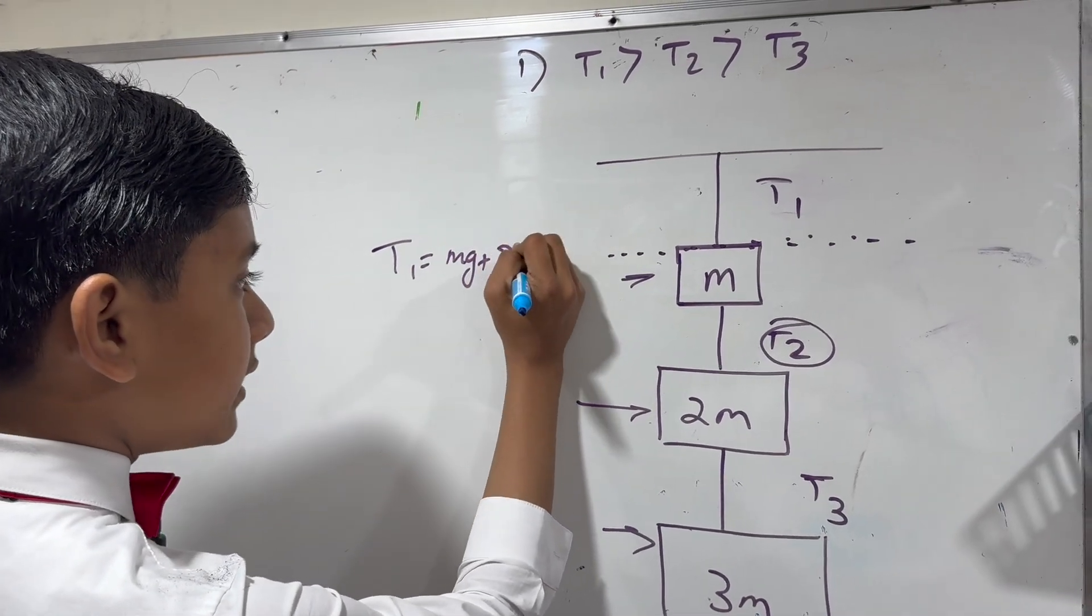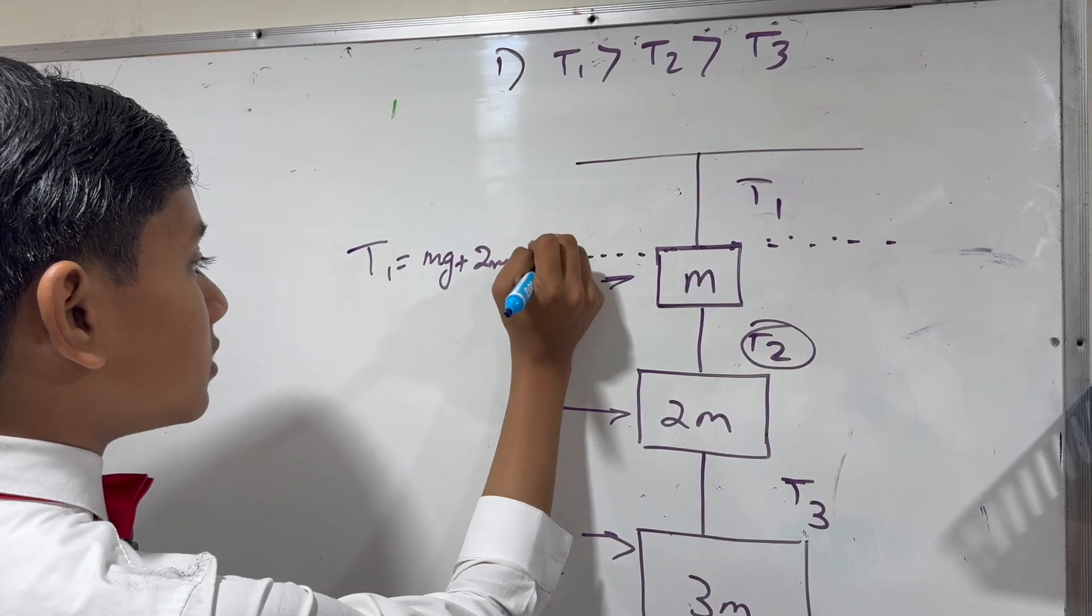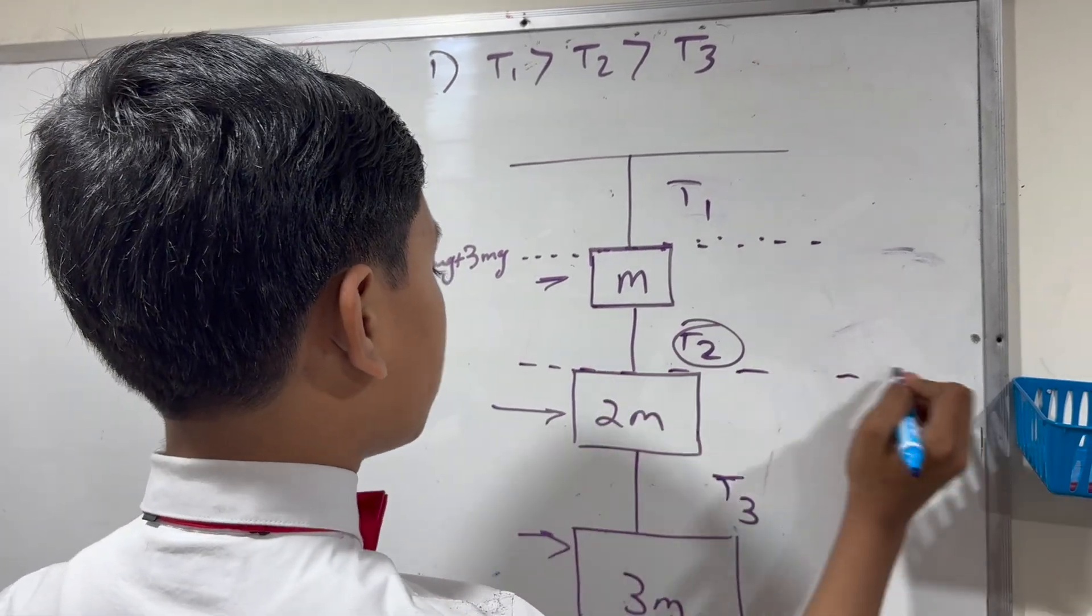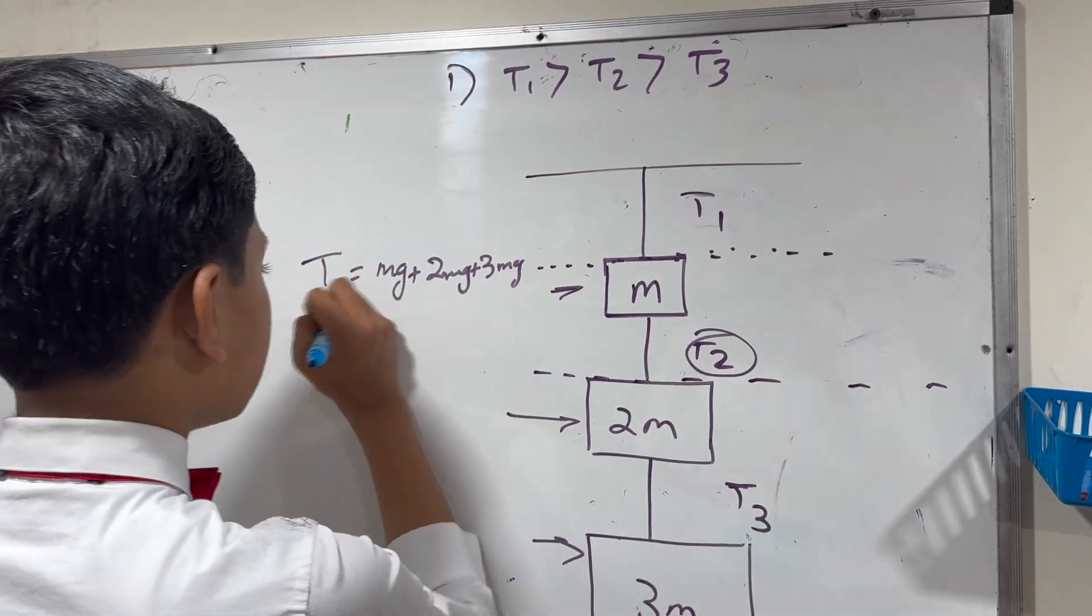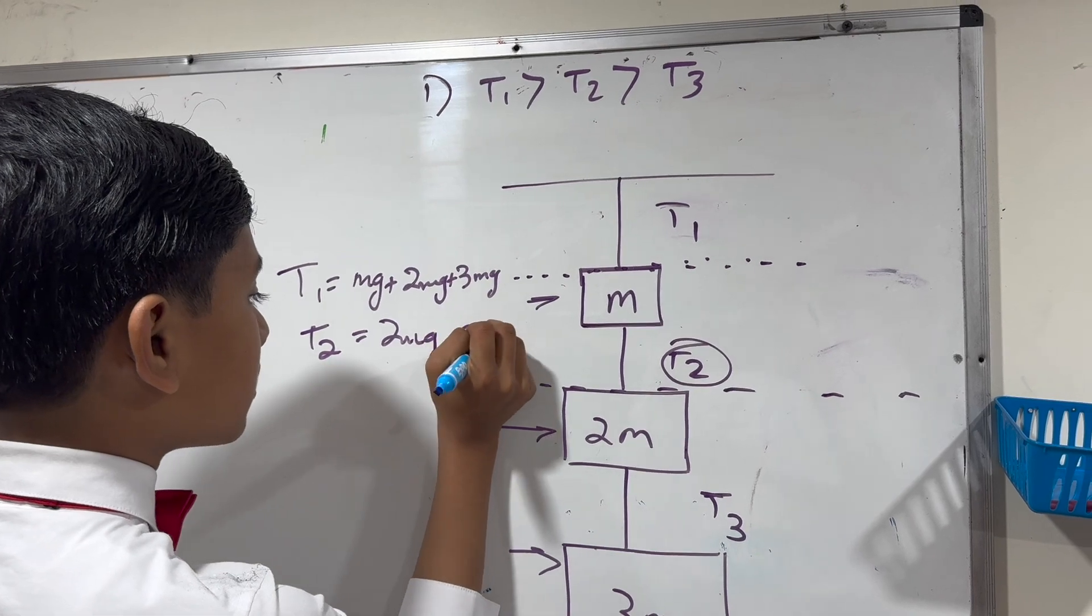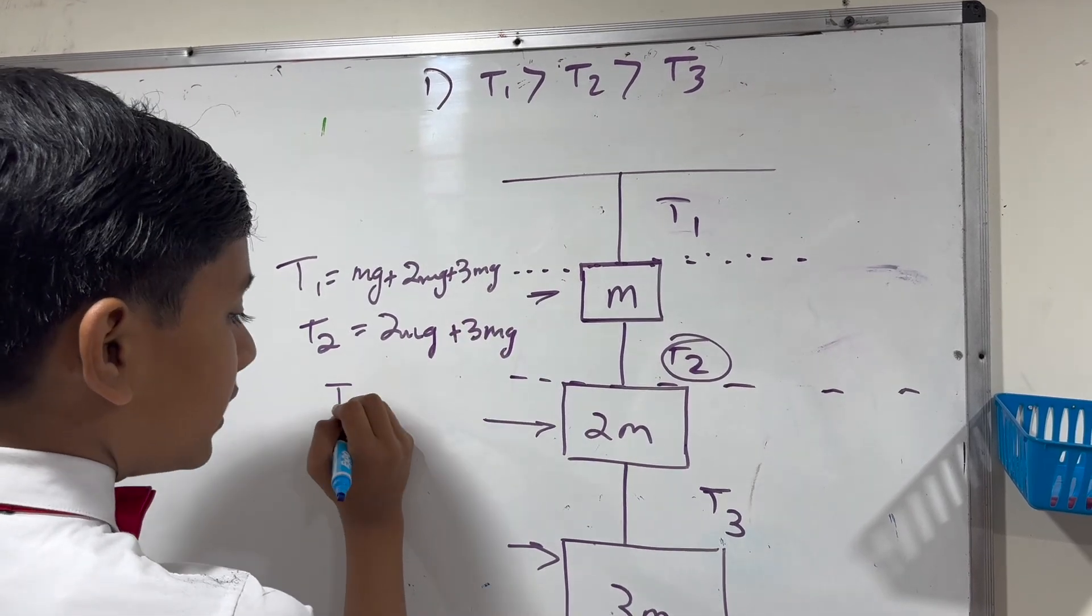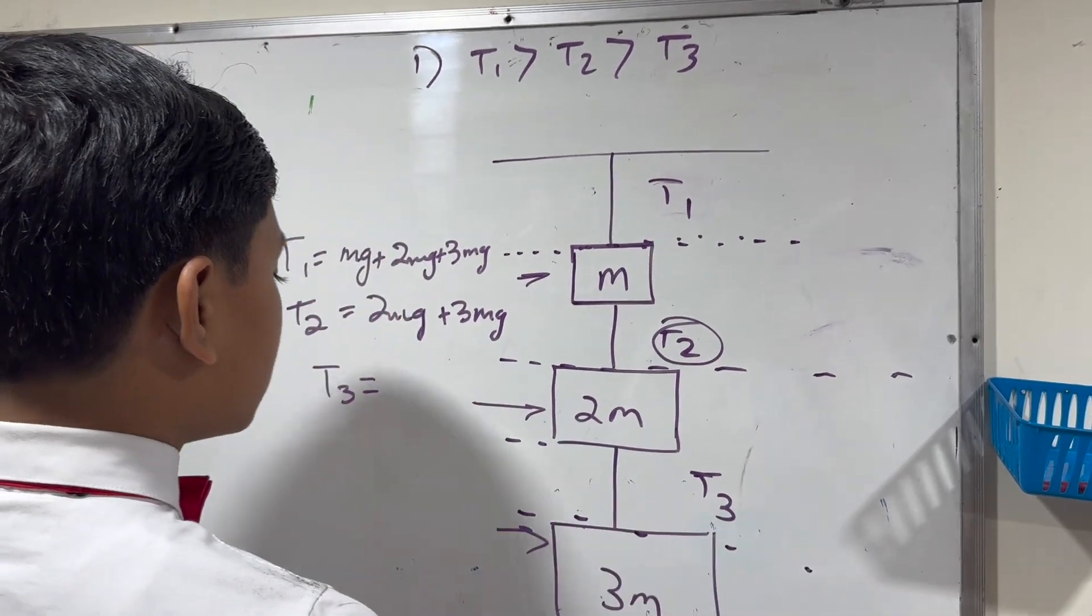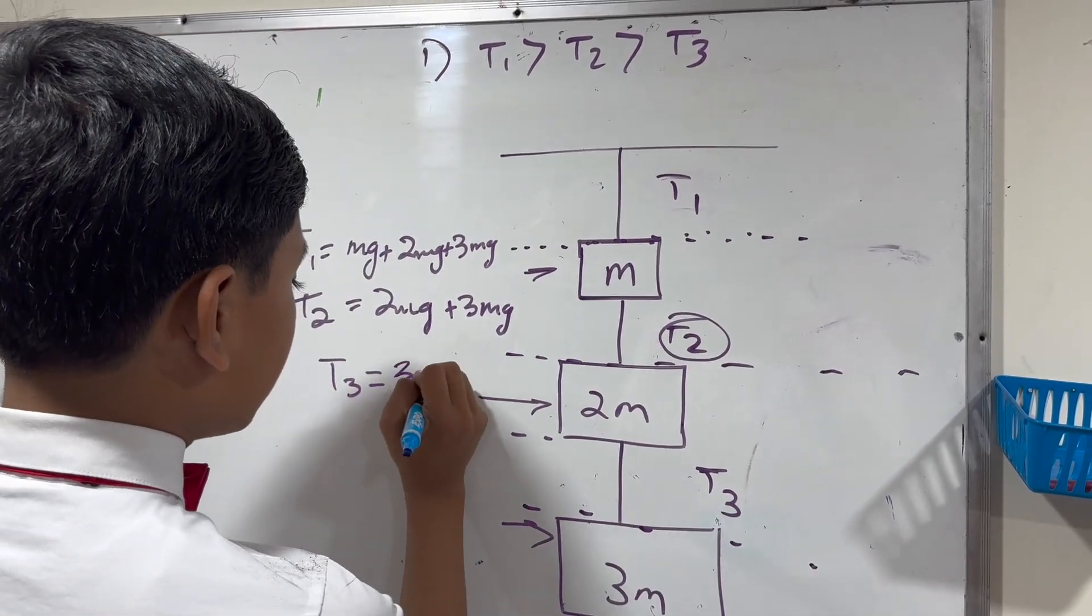Meanwhile, T2 only has to be pulling up everything below it, so T2 only has to be 2mg plus 3mg. And similarly, T3 only has to pull everything below it, so that's just going to be 3mg.